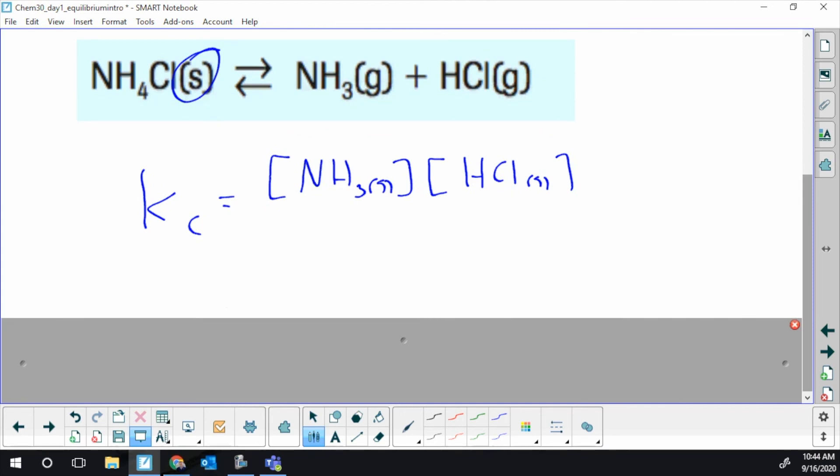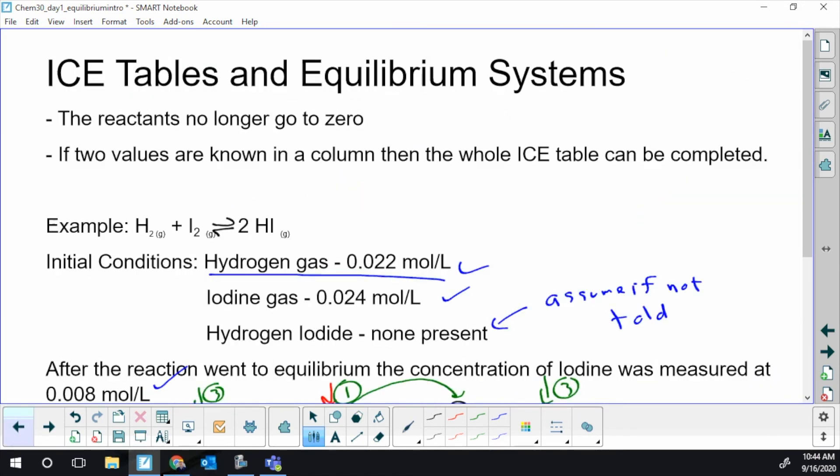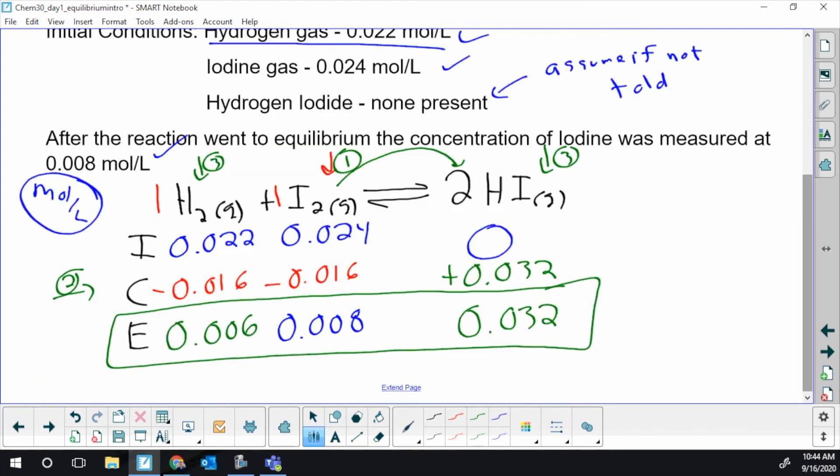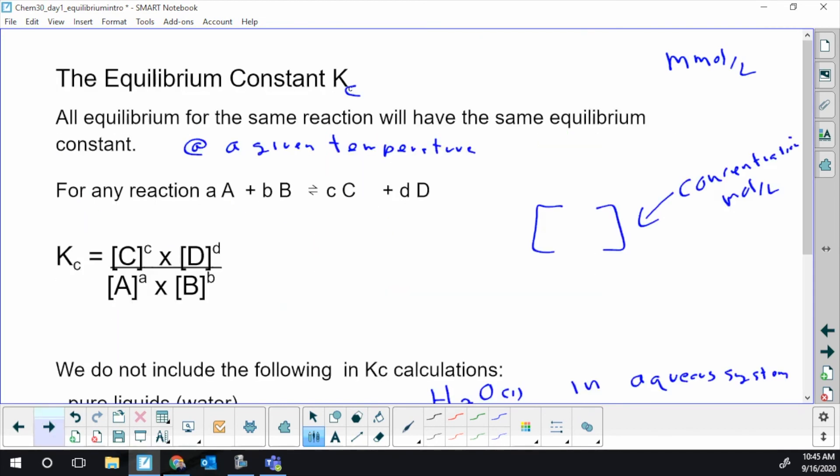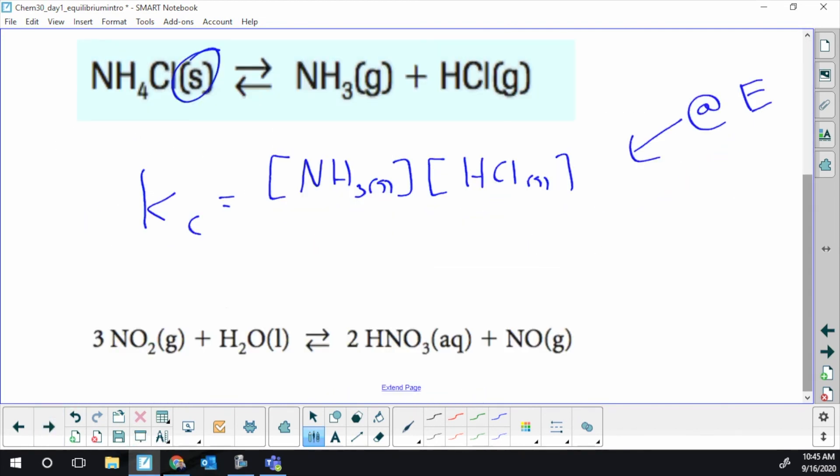Last one before we do a few math examples and actually solve for Kc values. The last thing I should emphasize: these values you put in have to be at equilibrium, so they're not I values, they're those E values. These values I could solve for the K value - I know all the E values, I could write the expression and plug the numbers in. But it's not the I's - you'll get undefined and zeros if you plug in I. It's the E values to tell us the equilibrium constant.